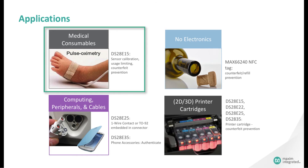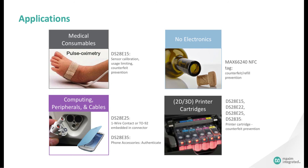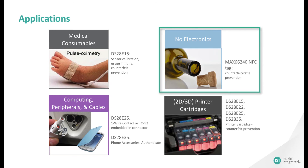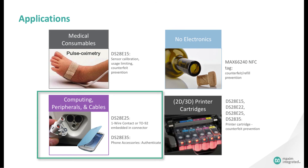Listed here are application examples that use Maxim authentication ICs. In a pulse oximeter, our authentication IC is used to ensure the sensor is only used once. Our device also calibrates the LED sensor to enable a more accurate reading. Counterfeit wine has been a problem for high-end winemakers for many years. To combat counterfeit wine, winemakers are deploying Maxim's NFC Near Field Communication authenticators. Because these are wireless devices, they can be embedded anywhere on products without electronics. Computing peripherals use authentication to ensure cables and accessories are OEM approved, with our authenticator IC shown in an SFN package on the cable.